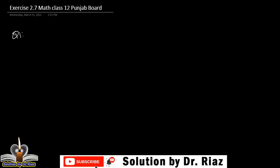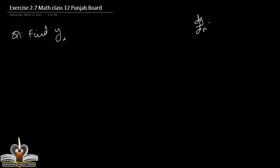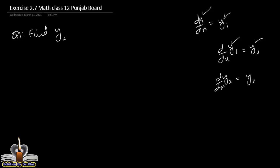Now we start Exercise 2.7, question number one: find y2. Keep in mind dy/dx is y1. اگر ہم y1 کو again with respect to x differentiate کریں گے تو یہ y2 بن جائے گا۔ y کو differentiate کیا تو y1، y1 کو differentiate کیا تو y2، اور y2 کو differentiate کریں گے تو y3 بن جائے گا، and so on.